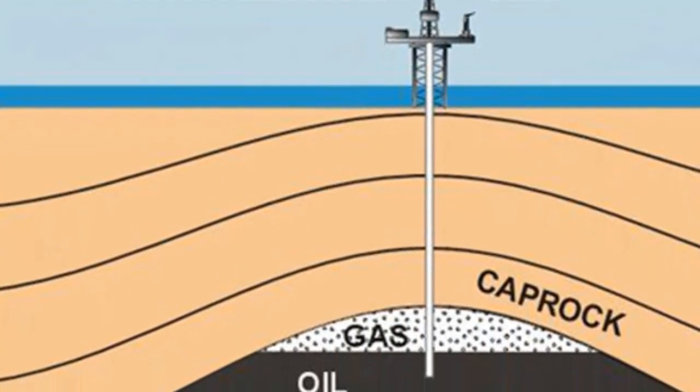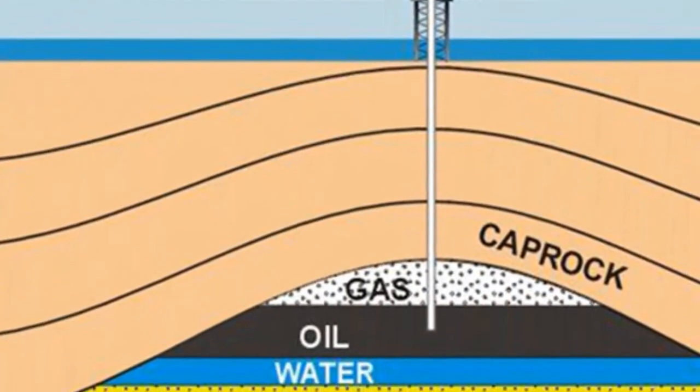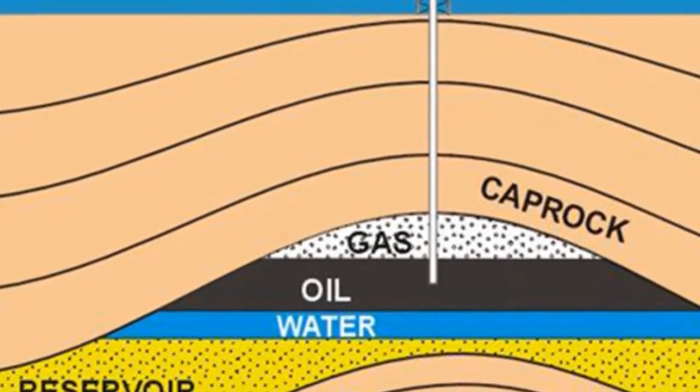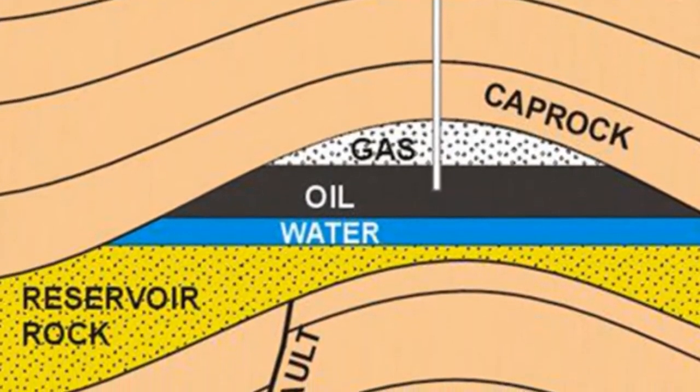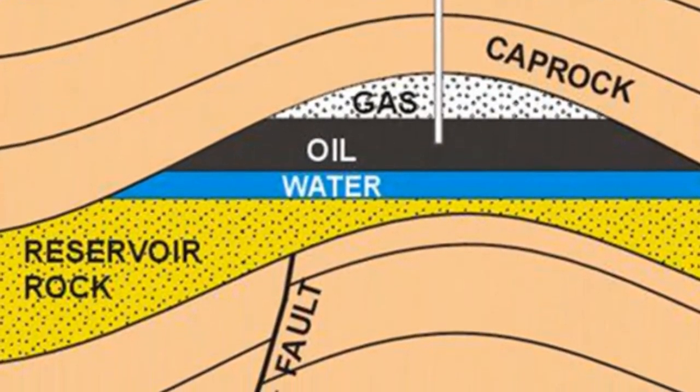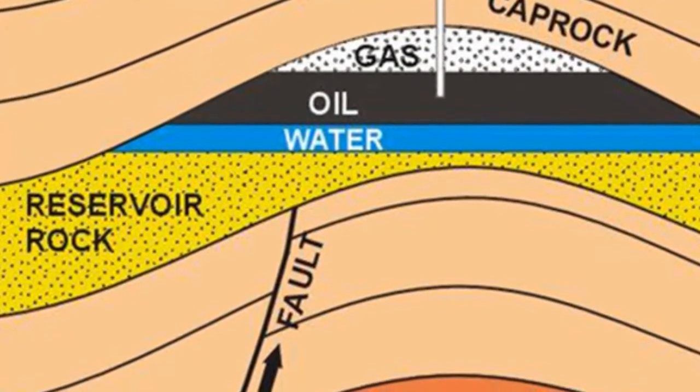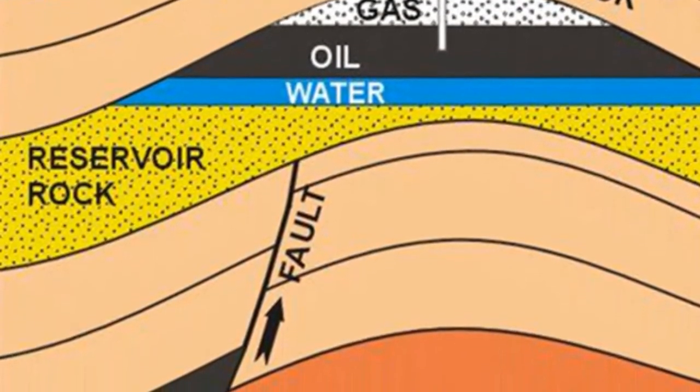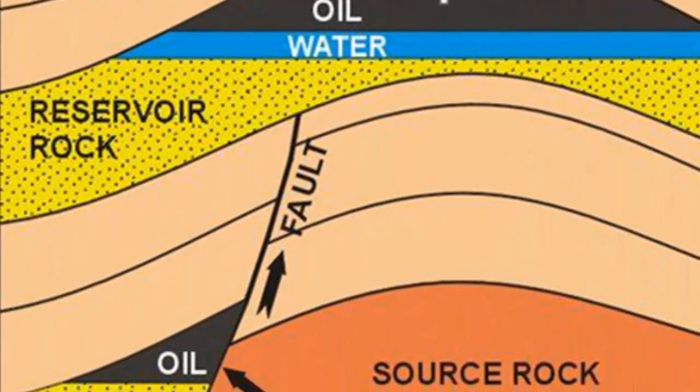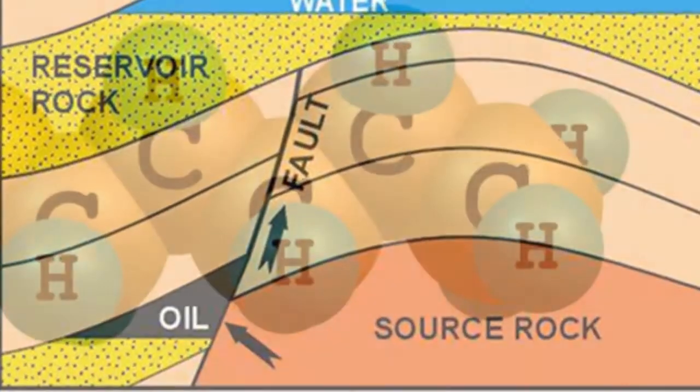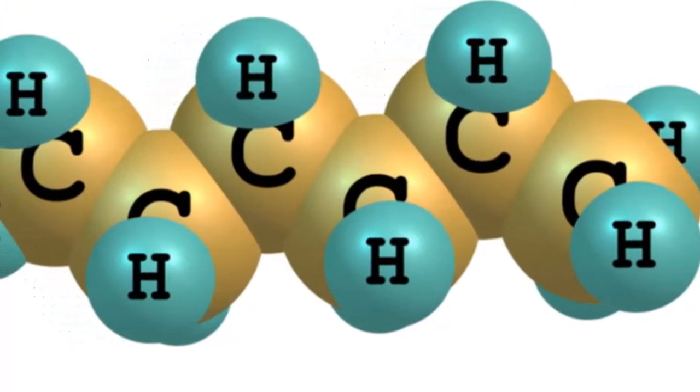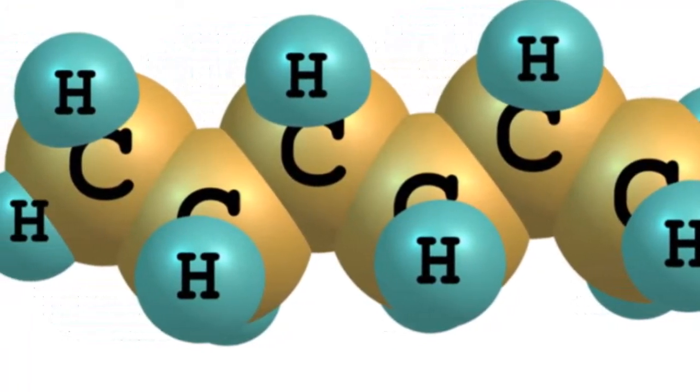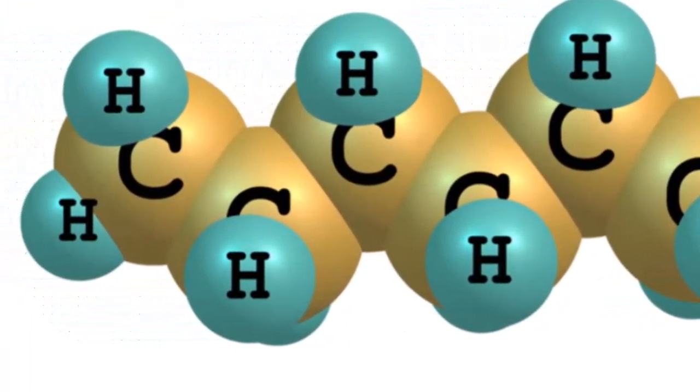Petroleum Geology: Formation of Oil and Natural Gas. Petroleum and natural gas are found in similar environments and frequently occur together.